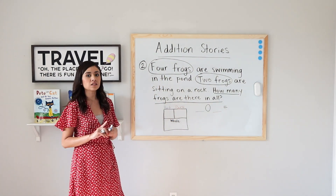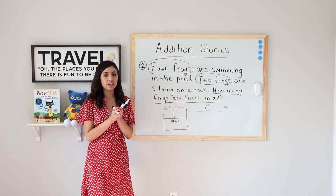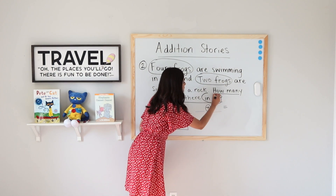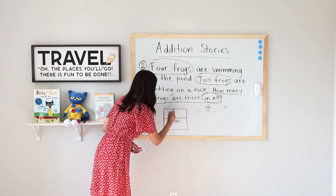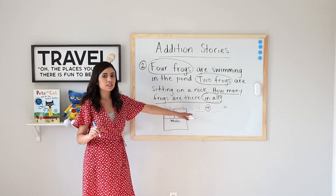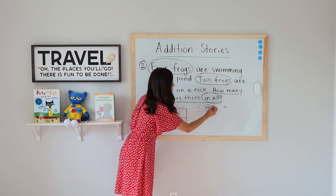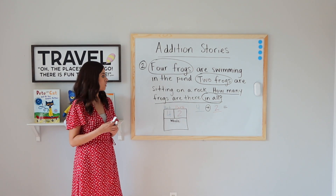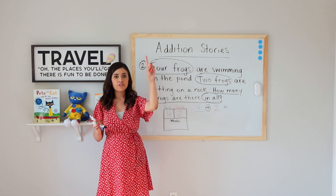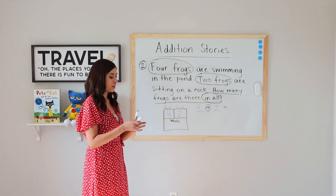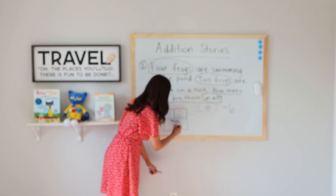Just like the last one, we need to ask ourselves: am I going to add these two numbers to find out the whole, or am I going to subtract them? If you said add, you are correct — we will add, because 'in all' means to add. So our first part is four — let's write four for part one, and I can write that over here too for my addition number sentence. How many frogs are sitting on a rock? Two. So let's write that second part — two. I can hold up a fist and say four, and count up two: four, five, six. My answer is six. So four plus two equals six — four plus two gives me a whole of six.